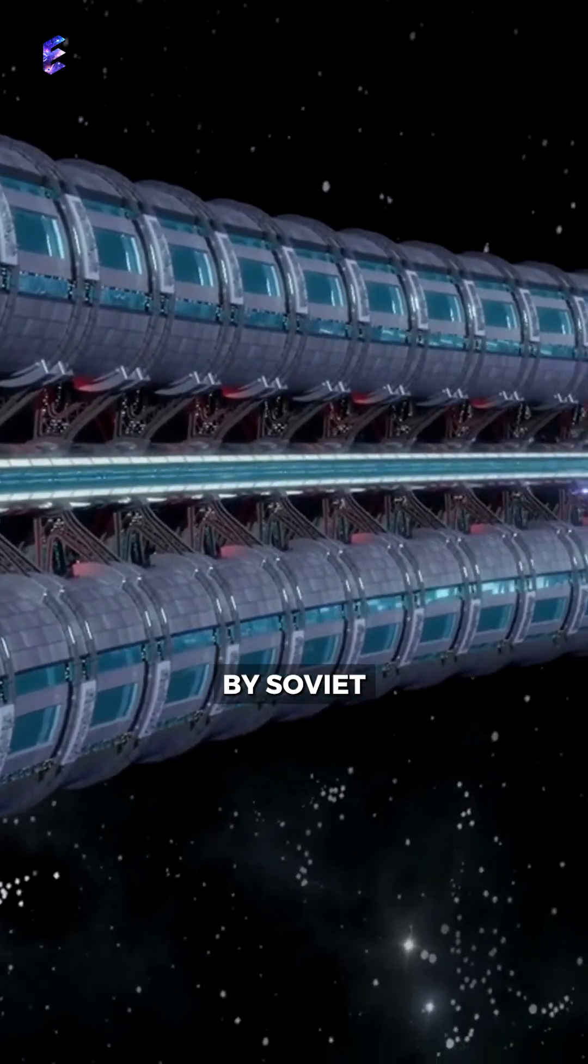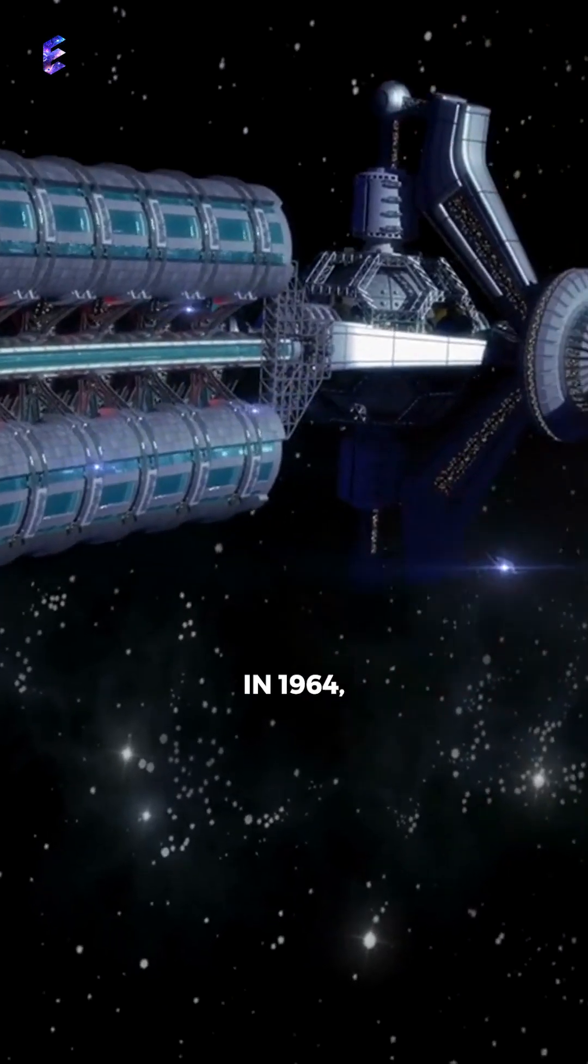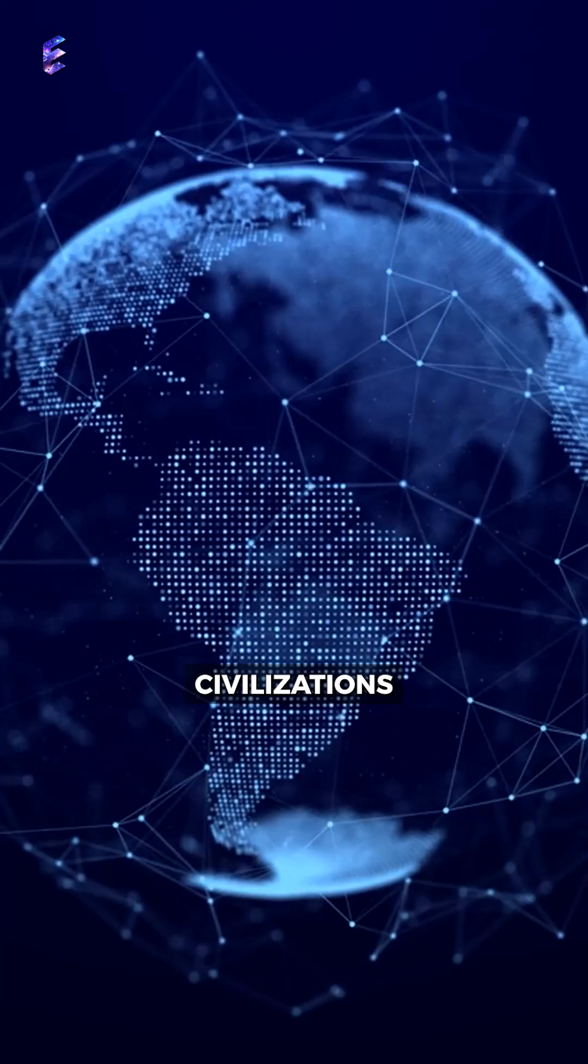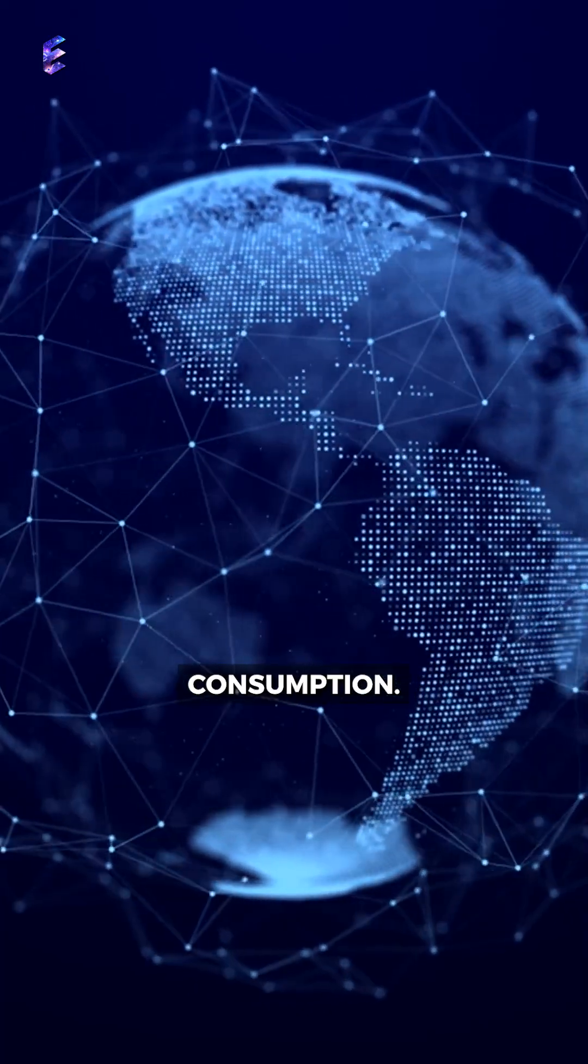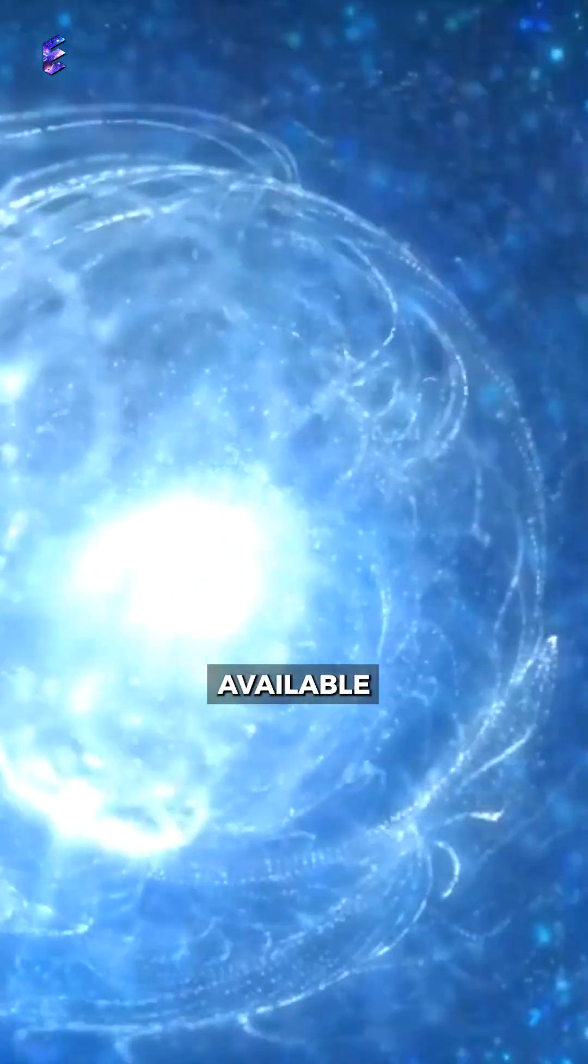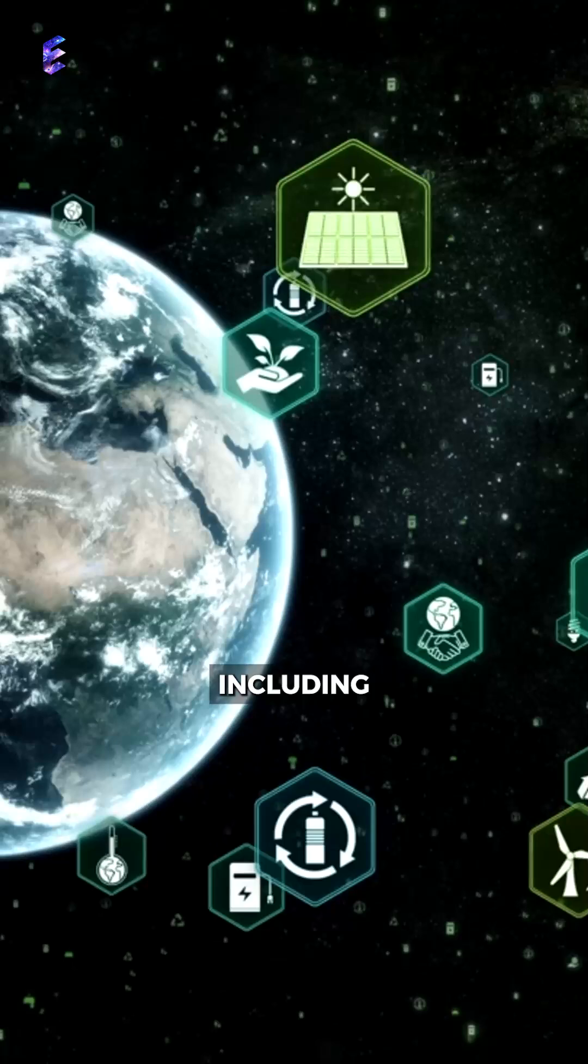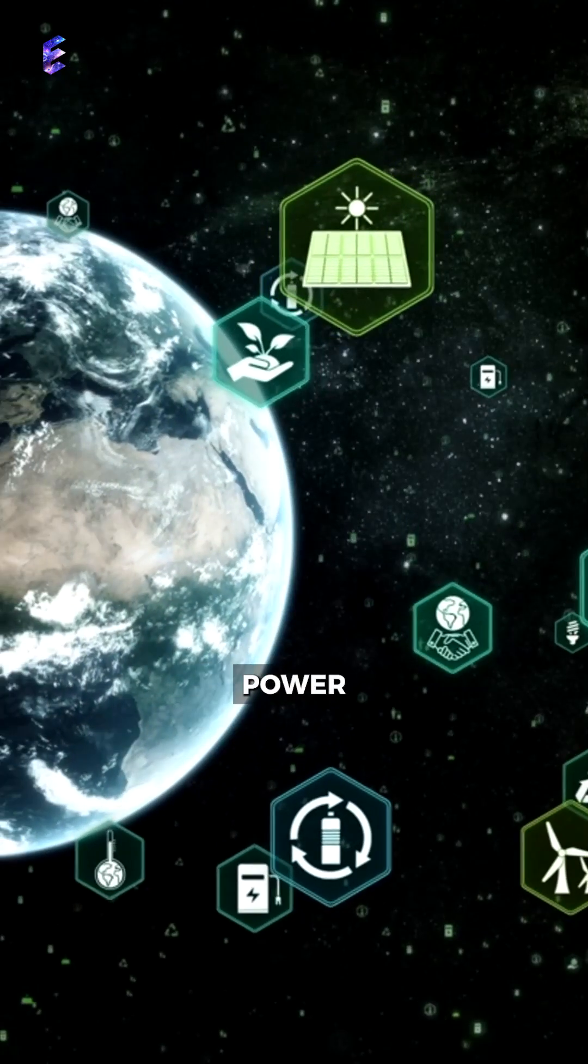The Kardashev Scale, developed by Soviet astronomer Nikolai Kardashev in 1964, classifies civilizations based on their energy consumption. Type 1 civilizations harness all available energy on their home planet, including solar, wind, and geothermal power.